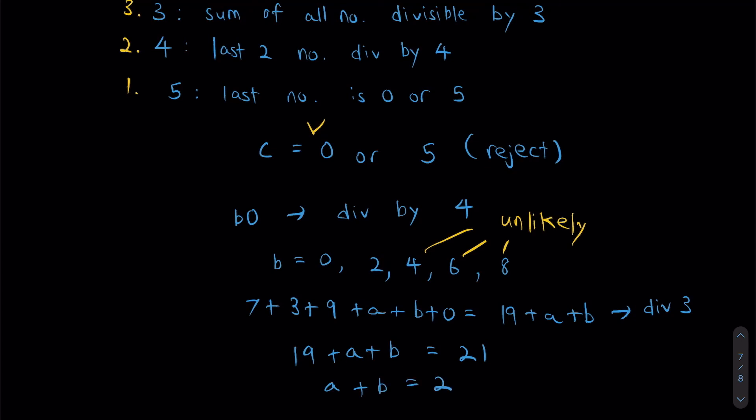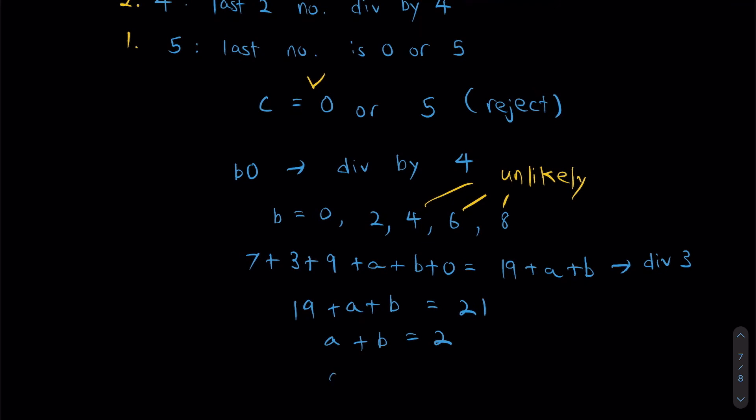So now, we have two options. It's either A equals to 2, B equals to 0, or B equals to 2, A equals to 0. Since B can't be 1, B can only either be 0 or 2. So these are our two options. We are narrowing down our options here.